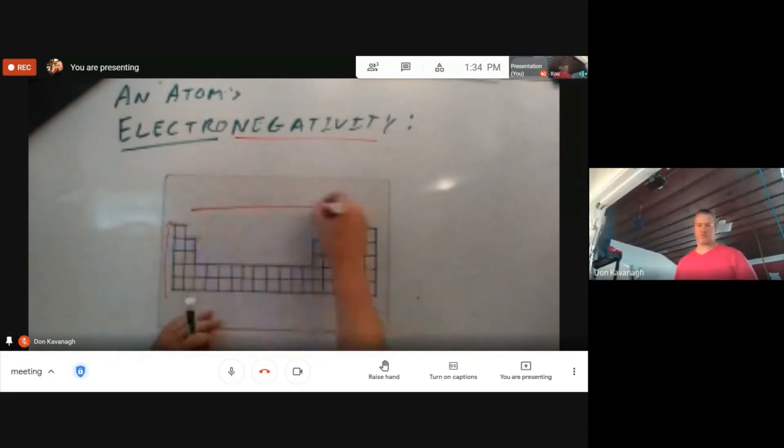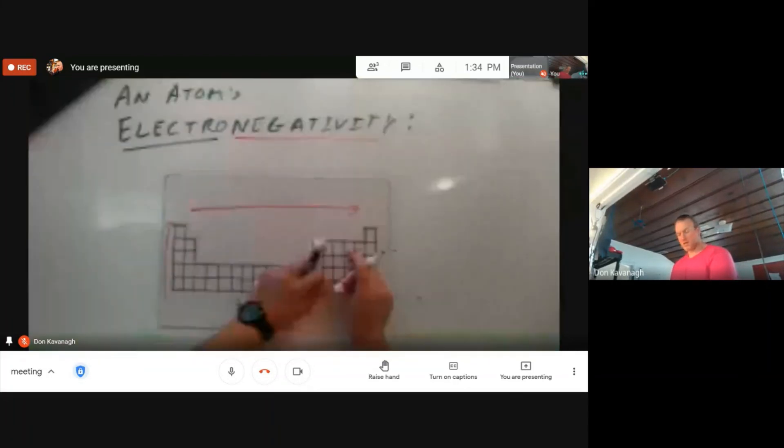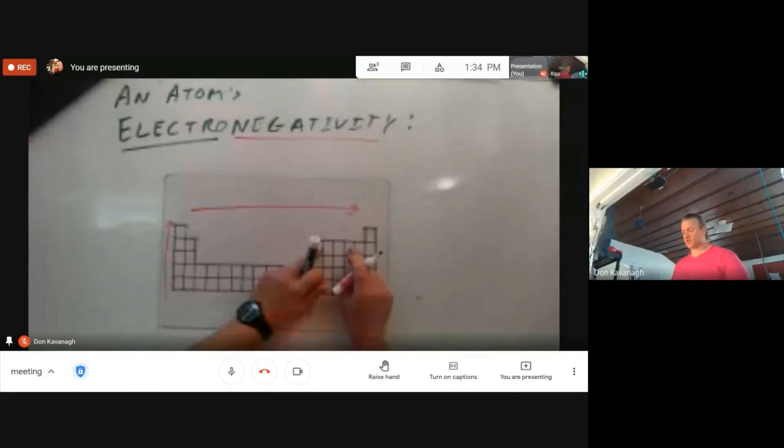Secondary is going to the right. If that atom is further to the right, it is going to have a higher or larger electronegativity. If you have two atoms that are in the same row, pick the one that is further to the right as having a higher electronegativity.